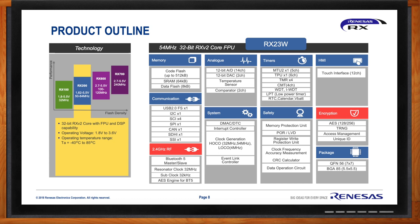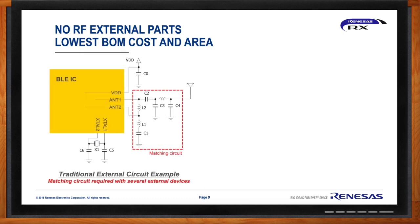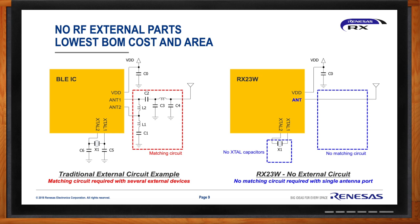With a lot of simple Bluetooth chips, the antenna needs to be tuned using external circuitry — is that the case here? No. We pull all of that tuning circuitry inside the chip so the antenna is fully tuned. There's no need for any external capacitors or any other components. The only thing you'll need is a crystal to drive the clock. Beyond that, no other external circuitry is required.